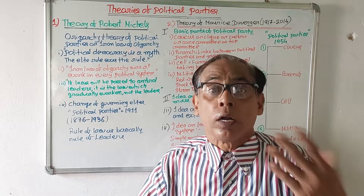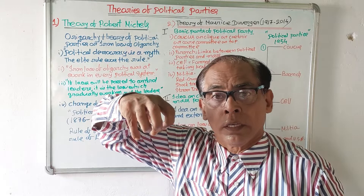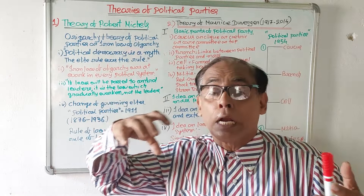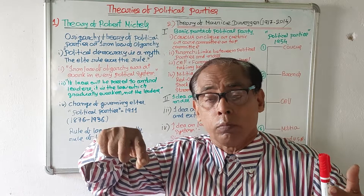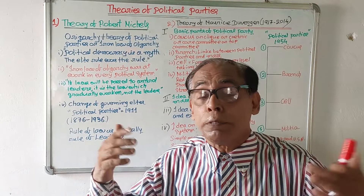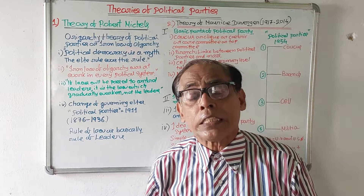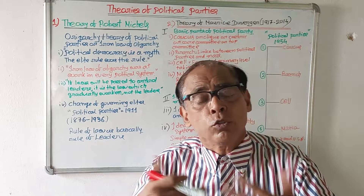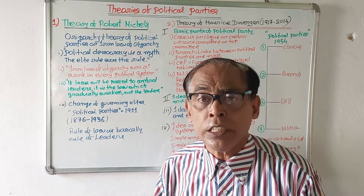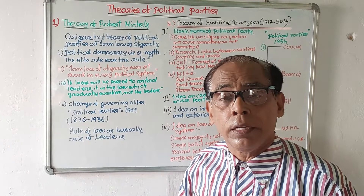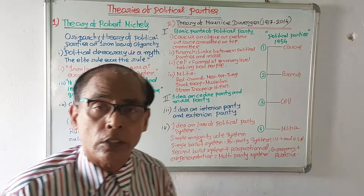To recap Robert Michels: every political party, whether democratic or undemocratic, is controlled by a few leaders known as political elite, caucus, or coterie. They control the entire political party and their direction is final. If they are changed, again a few will come. So every political party is ruled by a few persons. This is his theory, known as the oligarchy theory of political party and party system.